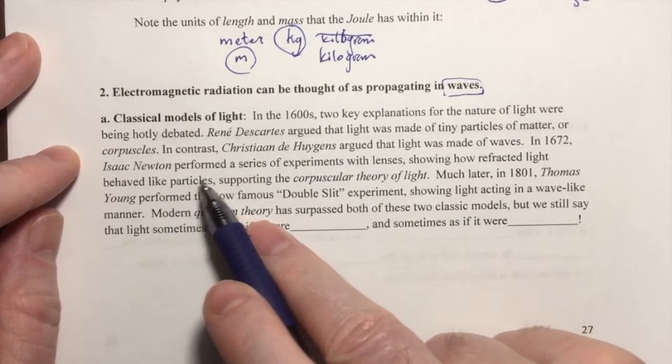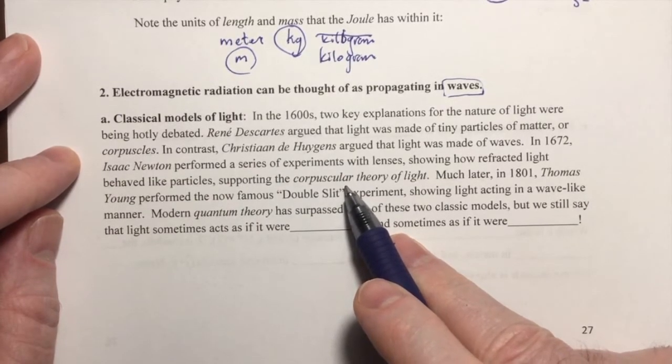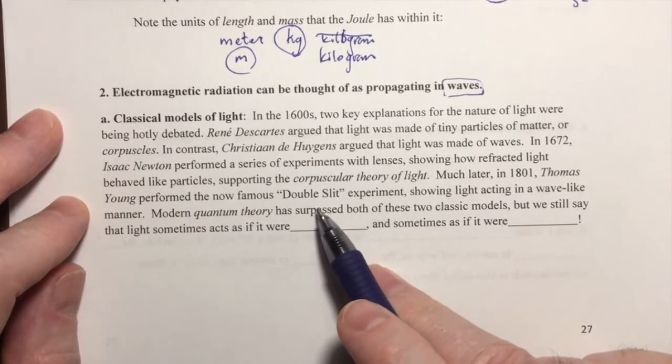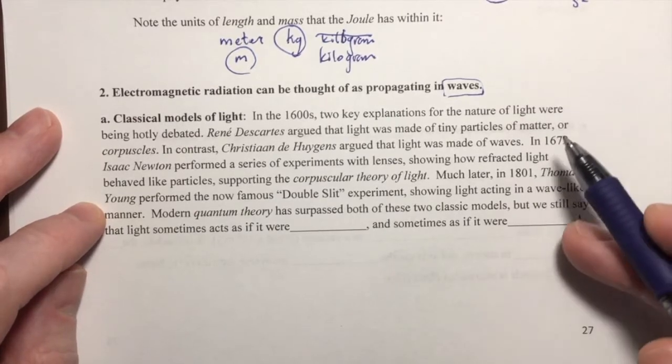Newton performed experiments that supported the corpuscular or particle theory of light. Thomas Young performed a very famous experiment now, called the double slit experiment, that showed that light behaves as waves.